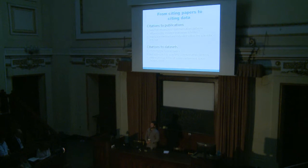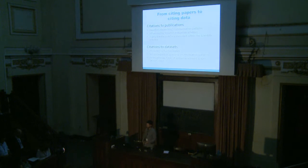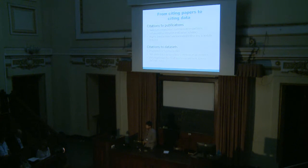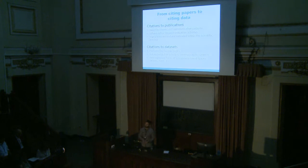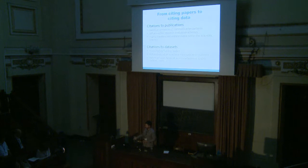One of the main problems with data citations is that they are very different in nature from publication citations. Publication citations are part of research communication behavior — it's what researchers actually do, and we use that for many purposes already built into scholarly communication practices. When we talk about data citations, we're trying to introduce them within those communication patterns and create a new way of tracking how data is used and reused.